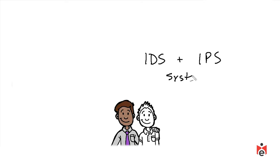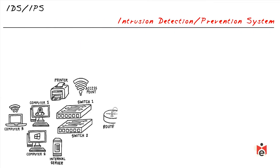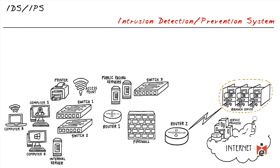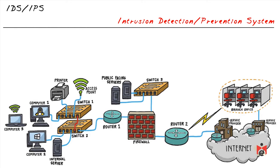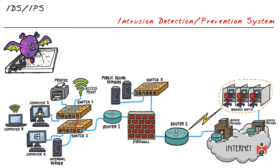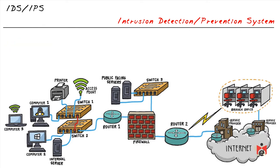Imagine a business where most customers are fine but occasionally there's a bad actor. We have a similar scenario in networks — traffic comes in from millions of locations and it would be great to identify packets and sessions that are problematic: hacking attempts, malicious content targeting servers, or traffic that could inject malware. One approach to identifying and stopping such traffic is an intrusion detection system (IDS) or intrusion prevention system (IPS).